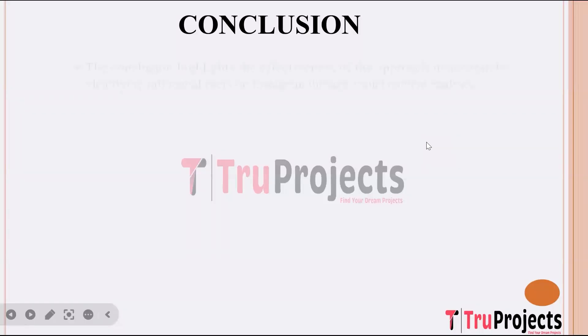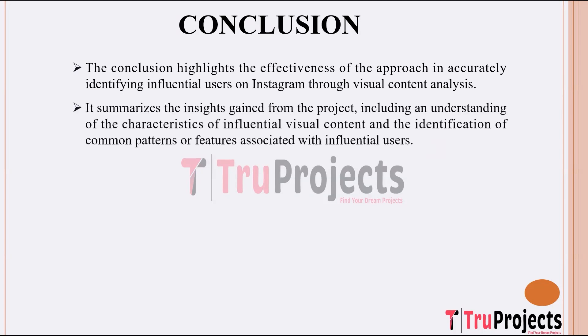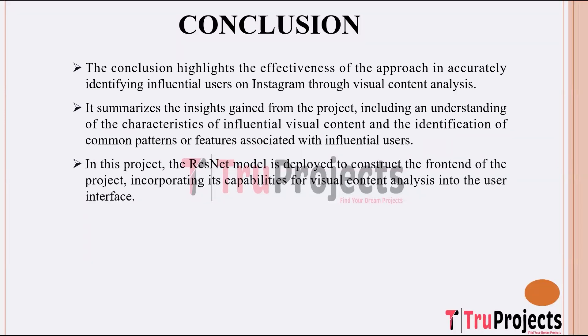Clicking sign out concludes the demo. The conclusion underscores the effectiveness of the project's approach in accurately identifying influential users on Instagram by analyzing visual content, signifying the successful achievement of the project's primary objective. It provides a summary of insights obtained throughout the project, including understanding the key characteristics of influential visual content and recognizing common patterns associated with influential users, contributing to a deeper understanding of user influence dynamics on Instagram. The project utilizes the ResNet model to develop the front end of the application, integrating ResNet's capabilities for visual content analysis into the user interface to enhance user experience.